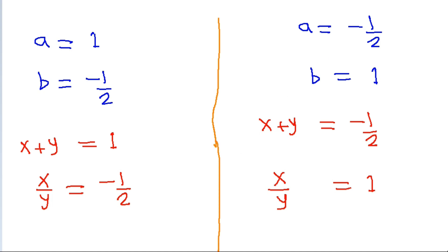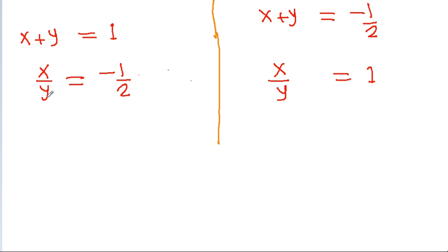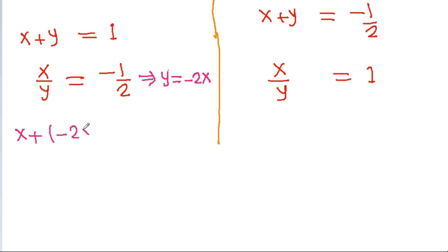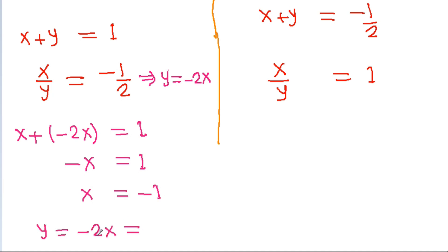From the second equation in Case 1, x by y is equal to minus 1 by 2, so we get y is equal to minus 2x. Substituting into the first equation, x plus y equals x plus minus 2x equals 1, so minus x equals 1, giving x is equal to minus 1. Then y is equal to minus 2 into minus 1, that is 2.